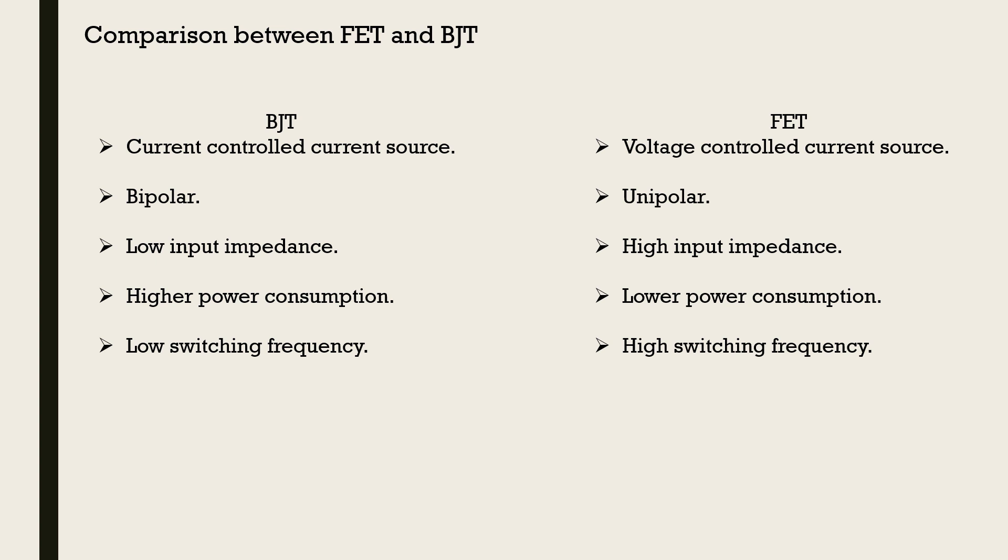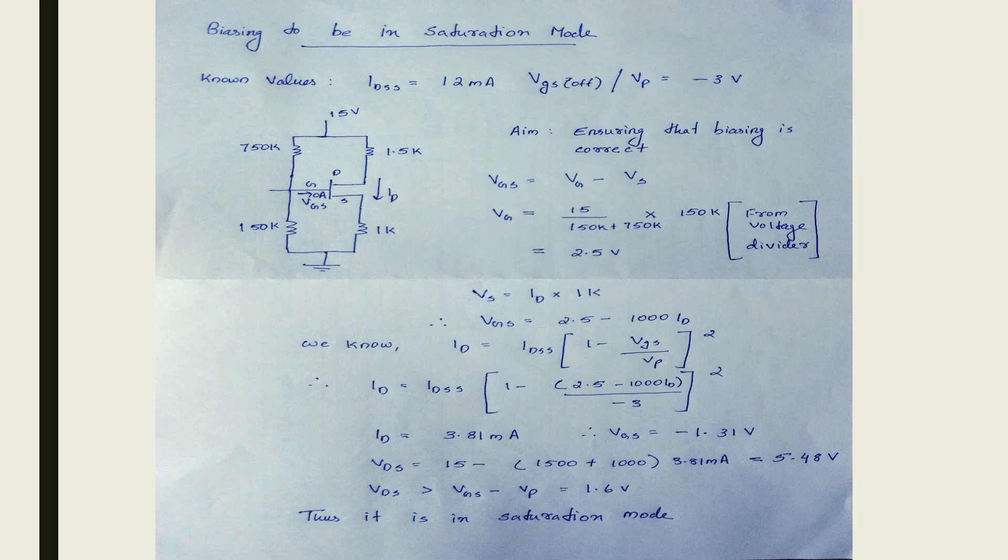Now, we will look into a problem and explain how it is beneficial for lab experiments. The problem presented to us is a typical example of FET biased in the saturation mode. We have previously known values. IDSS is equal to 12 milliampere and VGS off is equal to minus 3 volt. Our aim is to ensure that the biasing is correct. We are now going to find out the voltage values at each point.